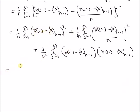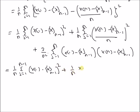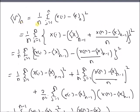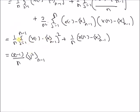The first term can be rewritten as a sum of two parts: 1/n times the summation from j=1 to n-1 of (x(i) - x̄(n-1))² plus 1/n times (x(n) - x̄(n-1))². The first part is nothing but (n-1)/n times the variance at n-1, from the original definition of variance evaluated at n-1.